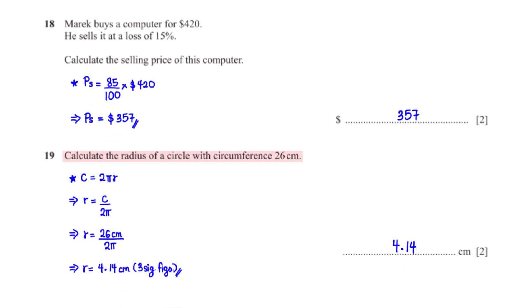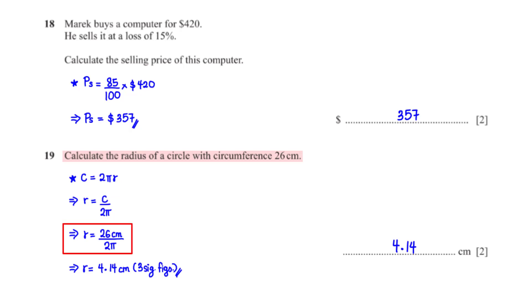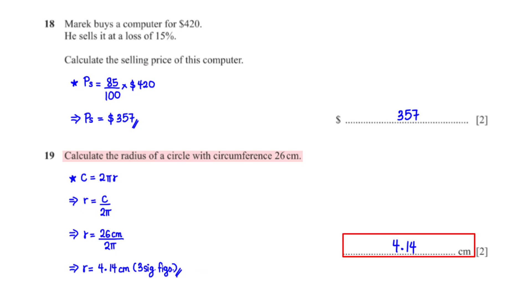Calculate the radius of a circle with circumference 26 centimeters. This is the formula for the circumference of a circle. We want to find r, so we make r the subject. The circumference c has been given as 26 centimeters. When we type this into the calculator, we get 4.14 centimeters rounded to three significant figures.